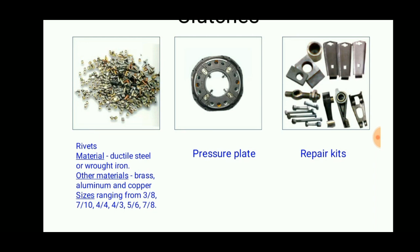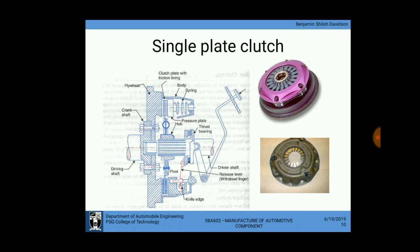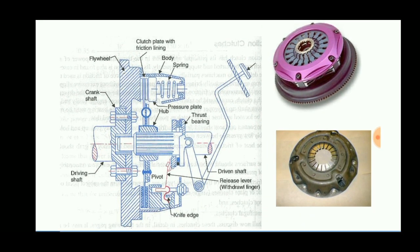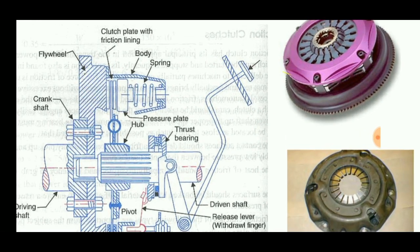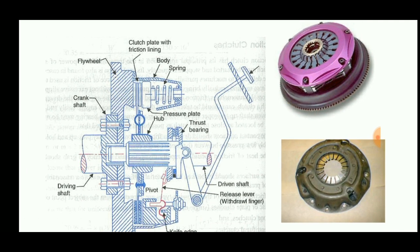This is a single plate clutch assembly — a component used in most two-wheelers. It consists of the crankshaft, trim shaft, and other parts. This illustrates the clutch system in motor vehicles.